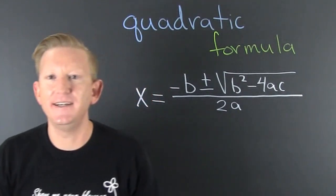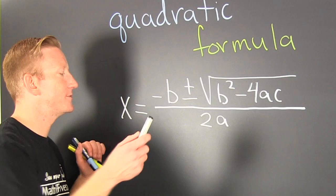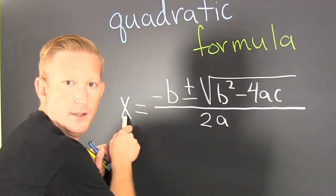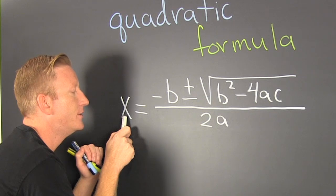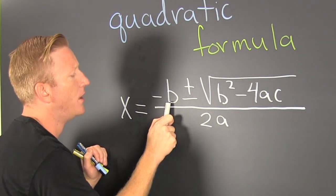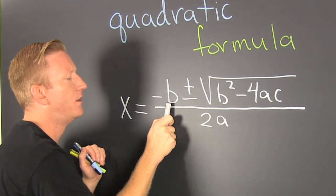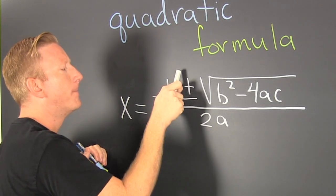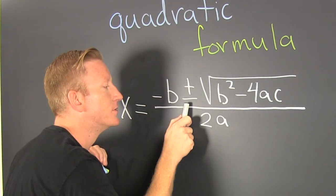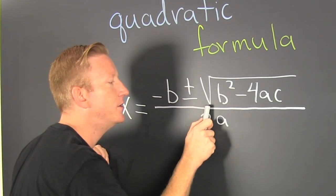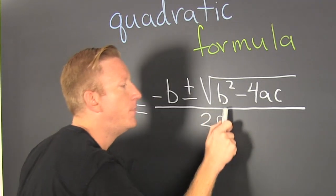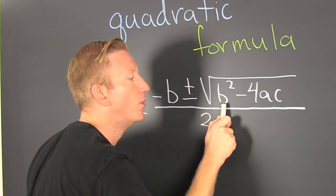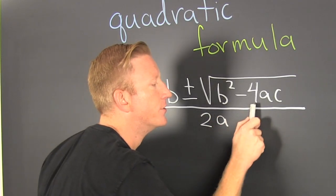X is minus b. Mas si menos raiz cuadrático. B cuadrático. Menos cuatro a c sobre dos a.